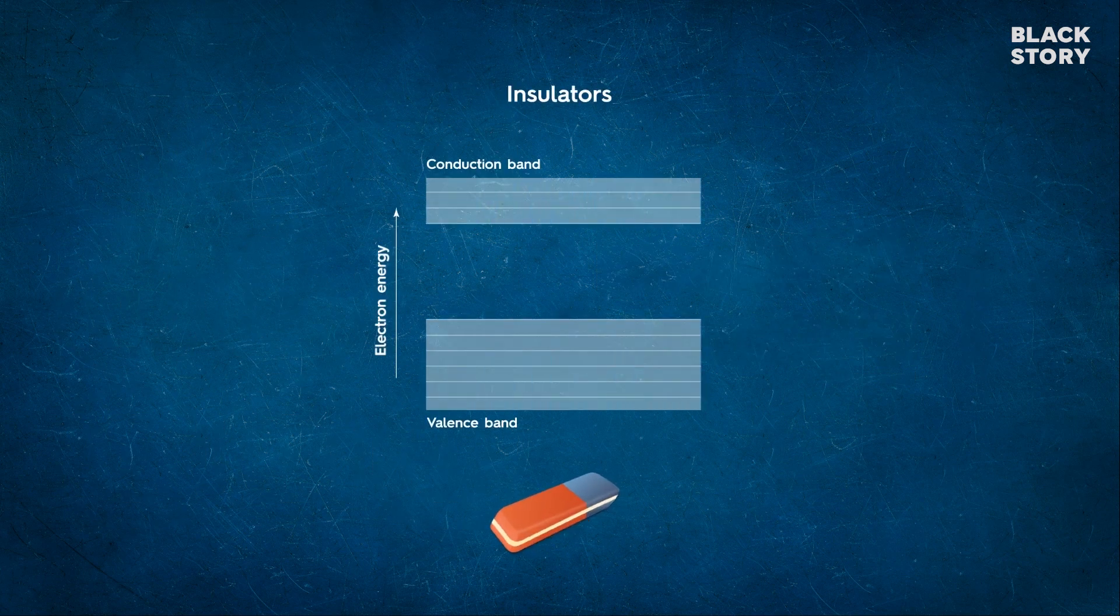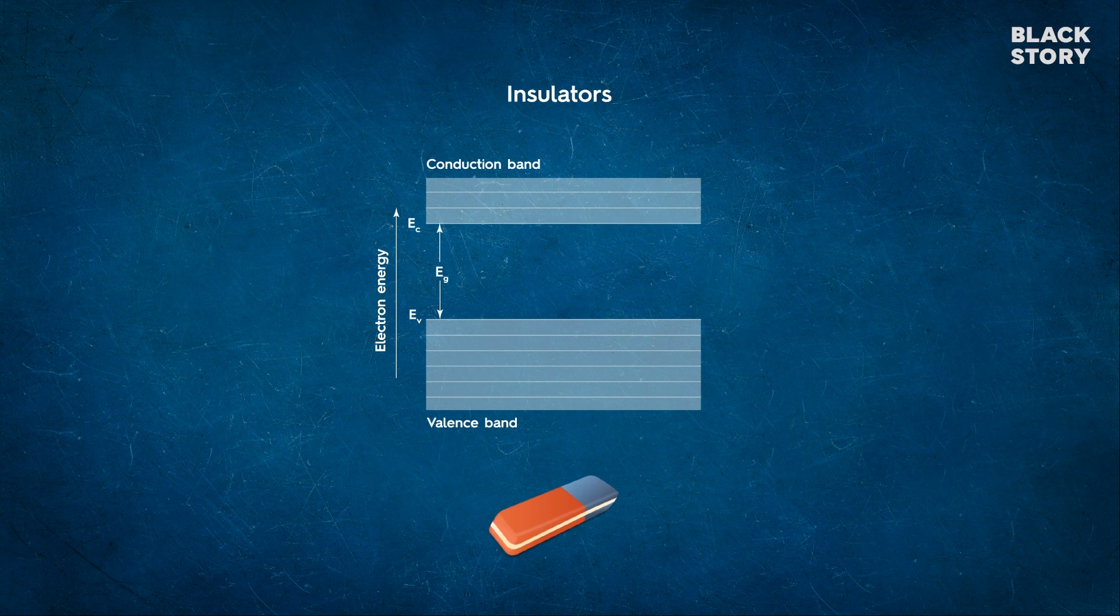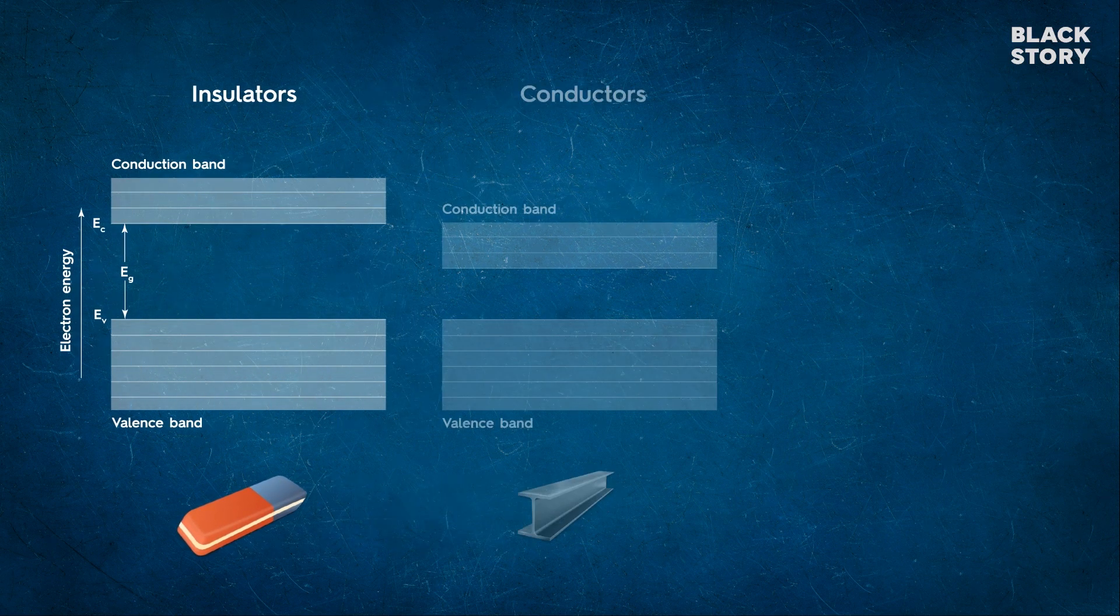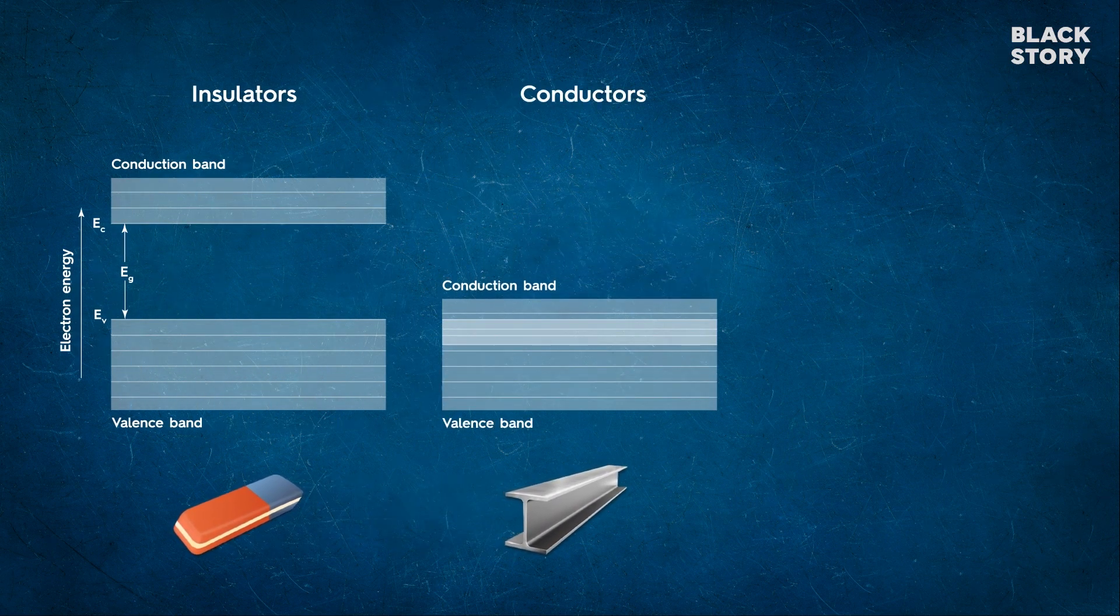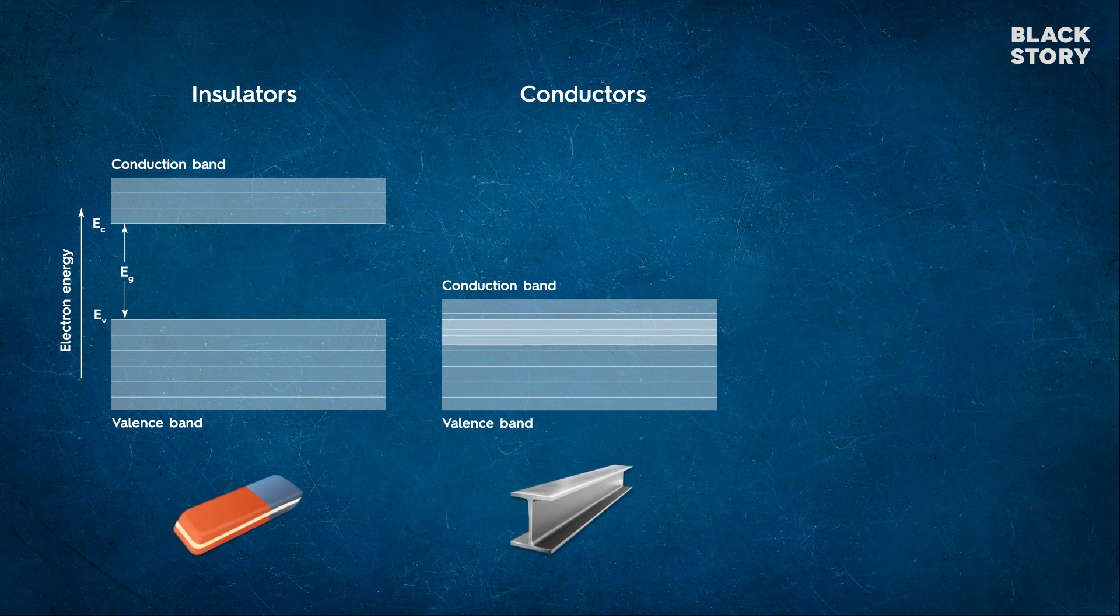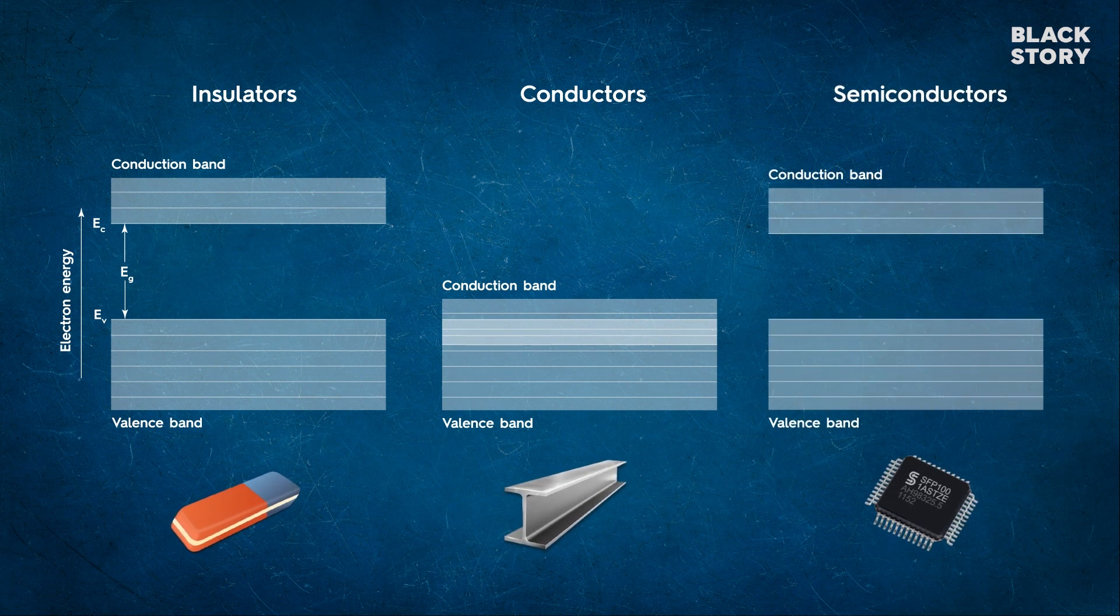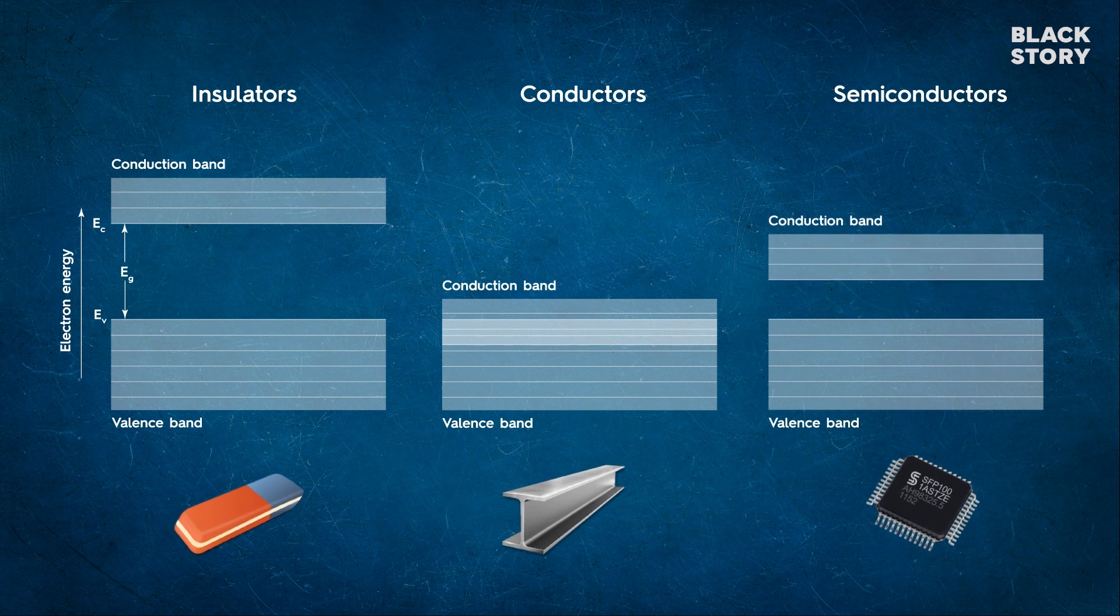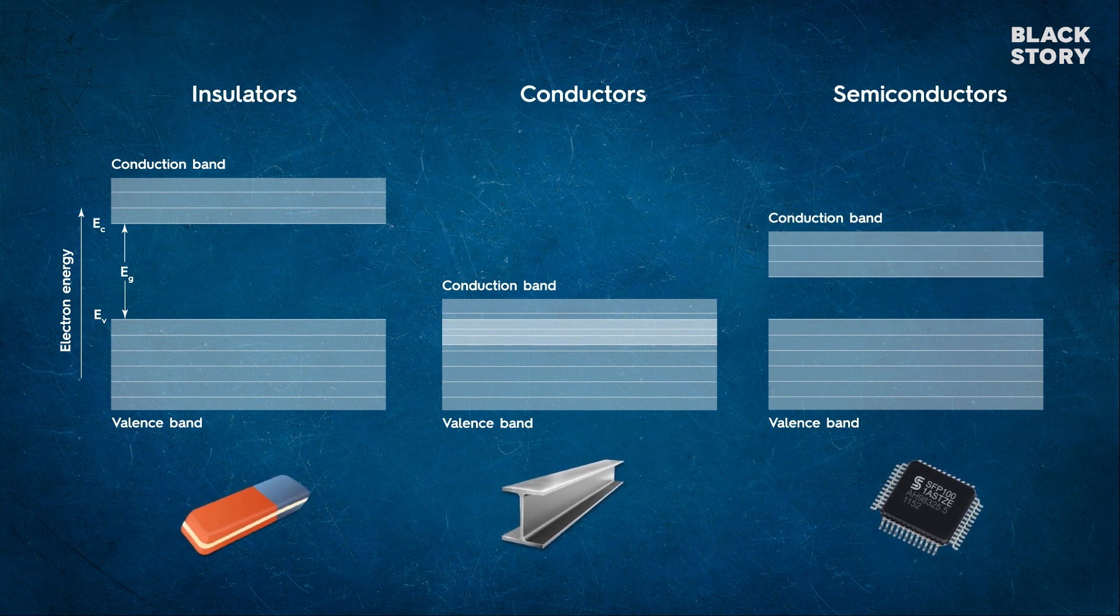In insulators, the electrons in the valence band are separated by a large energy gap from the conduction band. In conductors like metals, the valence band overlaps with the conduction band. Semiconductors have energy gaps lower than insulators and greater than conductors.